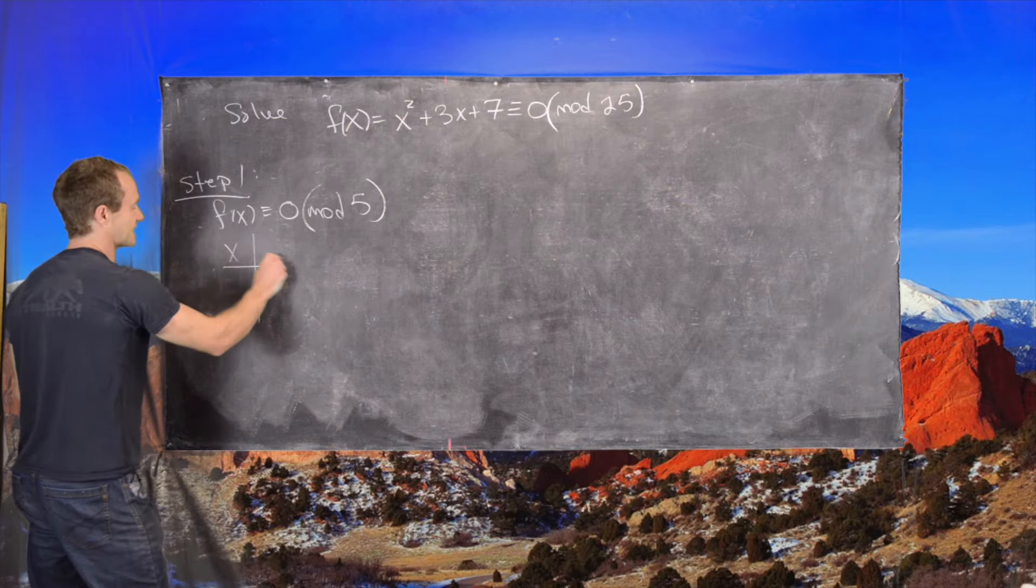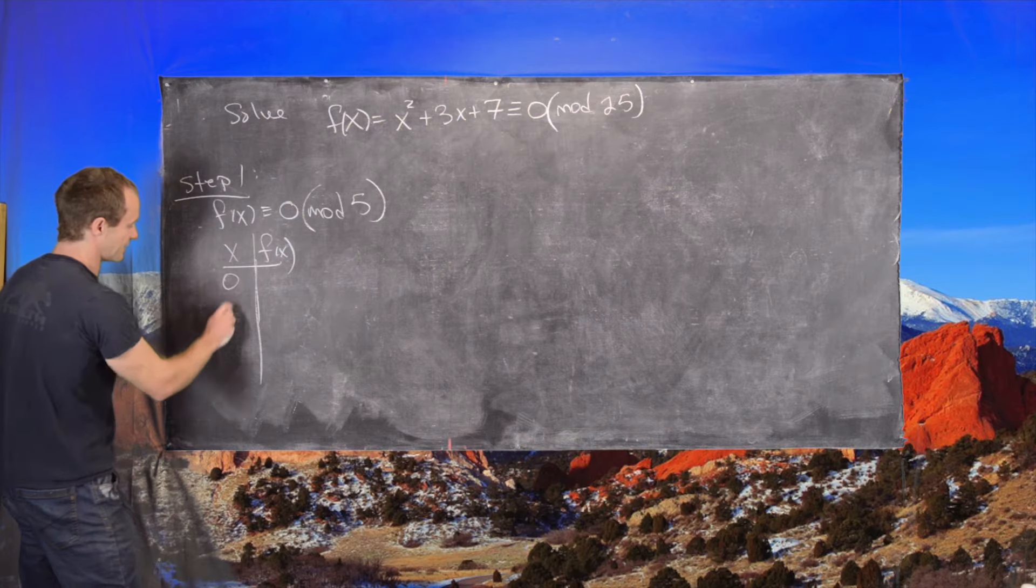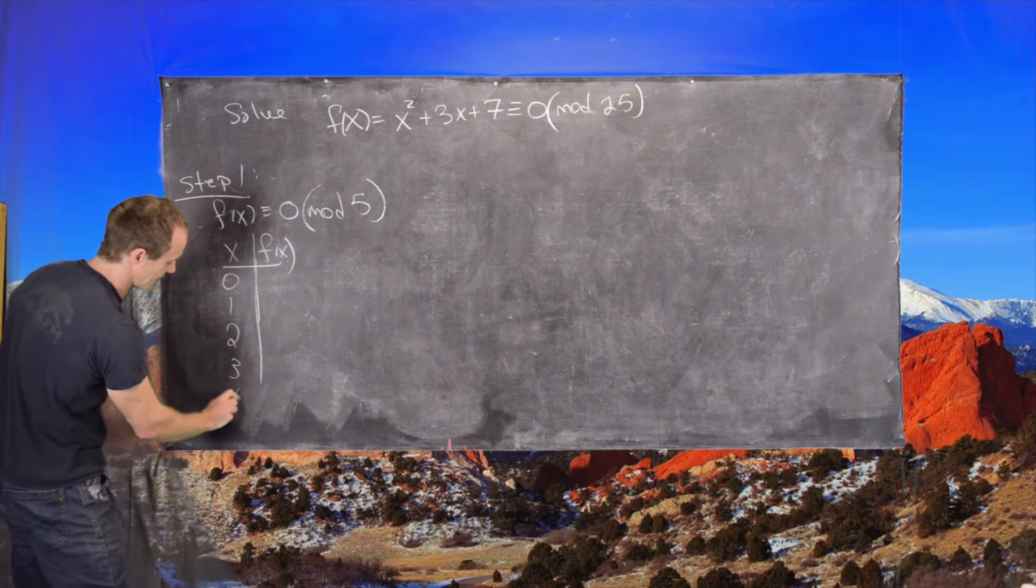And we'll notice that if we take x, f of x here, so we only need to consider the numbers 0, 1, 2, 3, and 4.